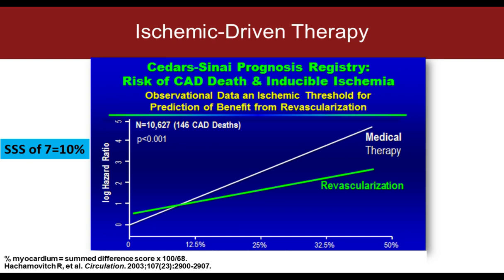A classic slide reported by Rory Hakamovich at Cedars-Sinai looked at the perfusion defect. The cutoff is between 10 and 12%: if you have a perfusion defect less than 10 to 12%, you do better with medical therapy. If you have greater than 12.5%, you do better with revascularization. This is what much of the guidelines have been based on. The ischemia study coming out at the American Heart Meetings may change our thinking, but this is the current standard.